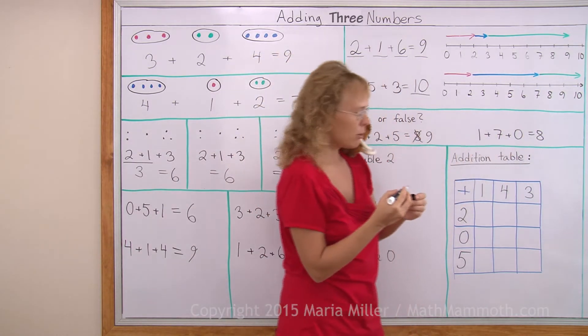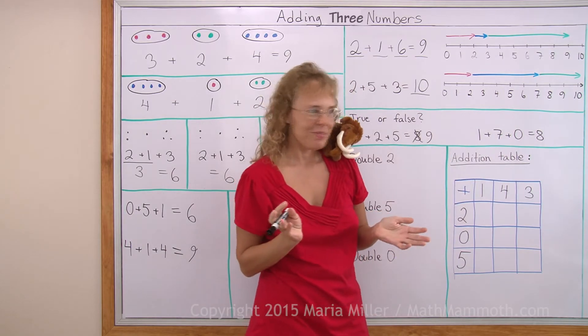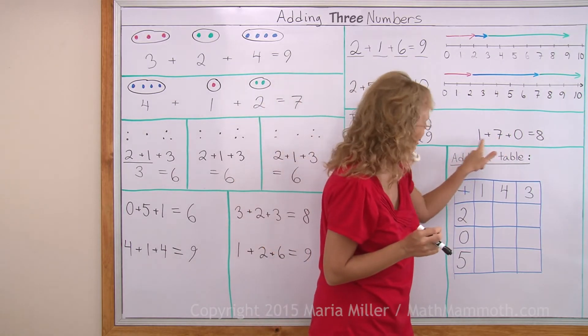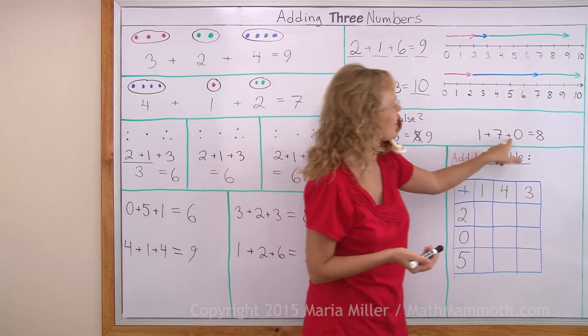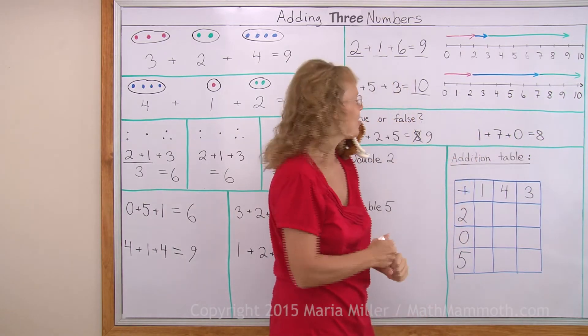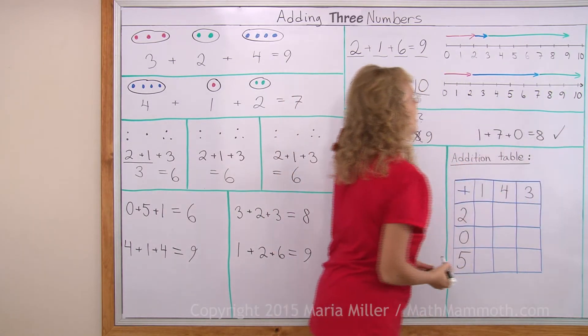One plus seven plus zero equals eight. Is it so? Seven and one makes eight, and then zero does not change it. So yes, that's correct. Let's put the mark there. That's true.